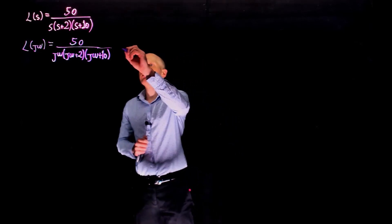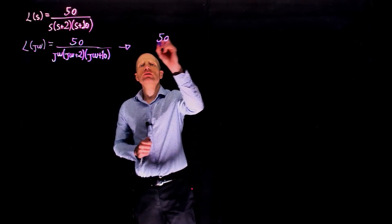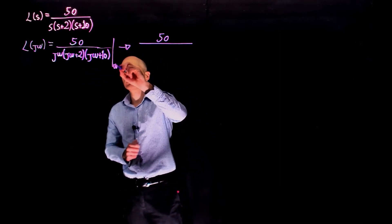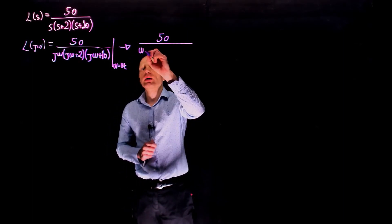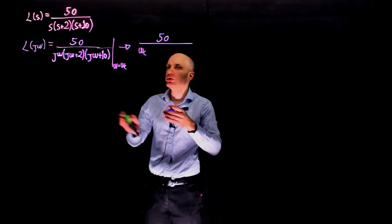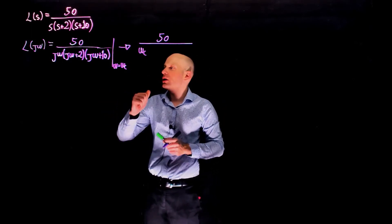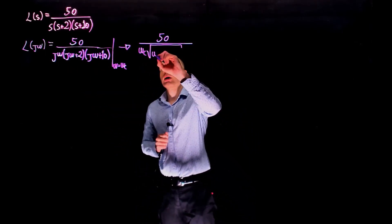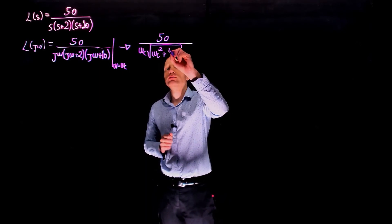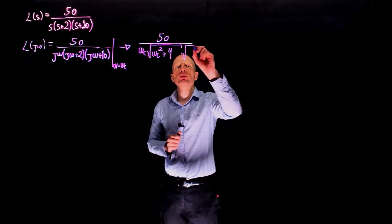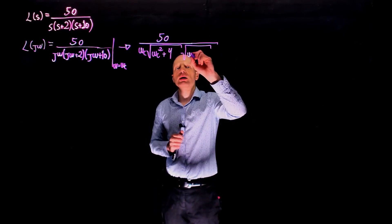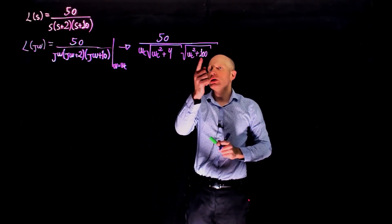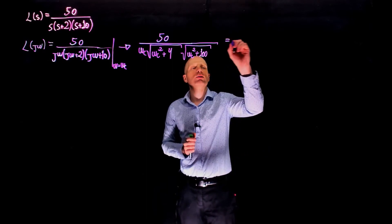The magnitude of this transfer function is 50 divided by the magnitude of the denominator evaluated at omega equals omega_c. That gives us omega_c (real part squared, which is 0, plus imaginary part squared, omega squared, square root of that sum), times the magnitude of the pole at 2, which is sqrt(omega_c squared plus 4), times the magnitude of the pole at 10, which is sqrt(omega_c squared plus 100), and this is equal to 1.